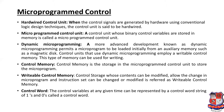The micro program control memory is the storage in the micro program control unit to store the micro program. Readable control memory — control storage content can be modified to allow changes in the micro program, and the instruction set can be changed or modified; this is recorded as a writable control memory. The control variables at any given time can be represented by a control word storing 1s and 0s.